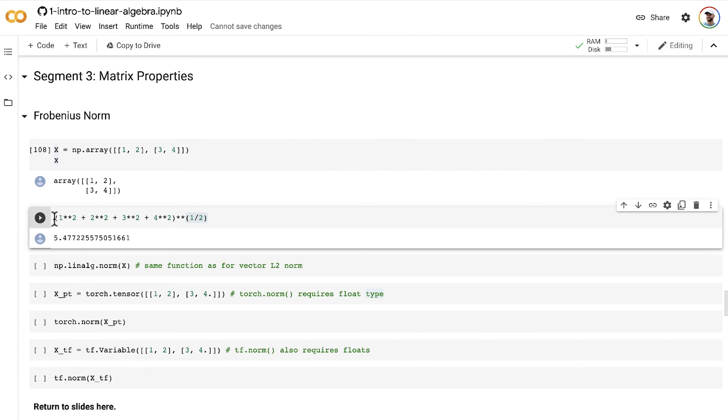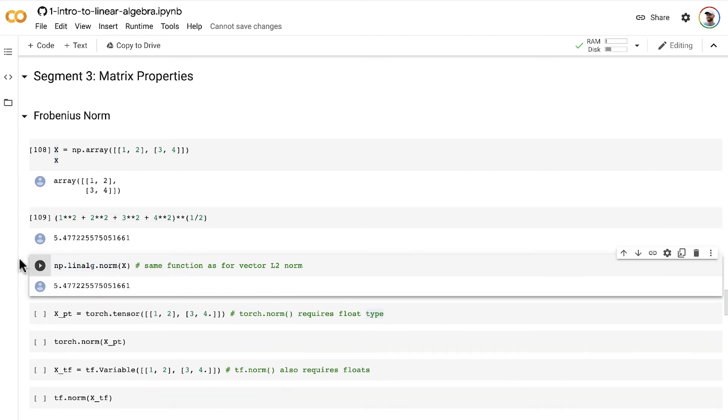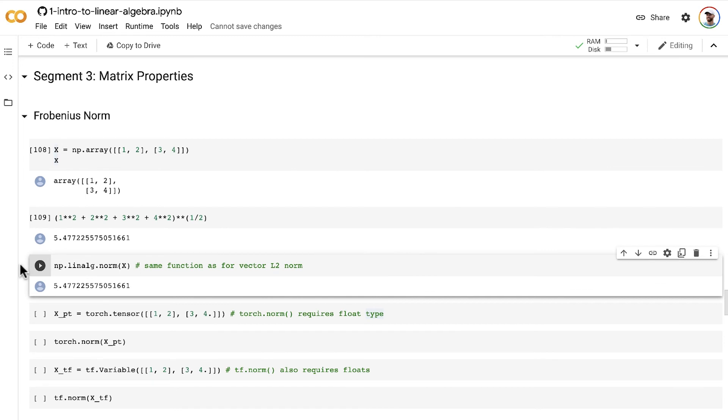Of course, we don't need to do it manually like this and do all the individual mathematics to get the Frobenius Norm. You can actually use the same function as we used earlier for the vector L2 Norm. So this linear algebra norm method in the NumPy library gives us that exact same 5.5 value as if we calculate it manually.